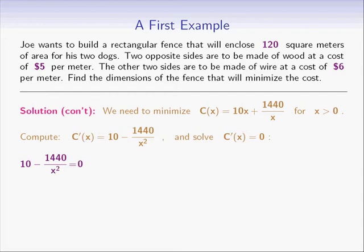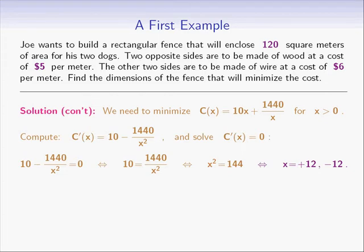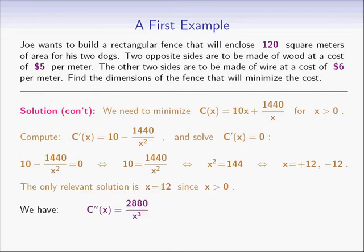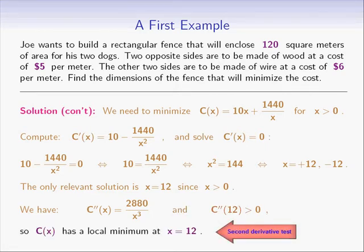The equation we get is 10 minus 1440 over x squared equals 0. This can be simplified, and we get x squared equals 144. The solutions are positive and negative 12, but the only relevant solution is x equals 12 since x has to be positive. So x equals 12 is our only critical point. Using the second derivative test, c double prime equals 2880 divided by x cubed, which is positive at x equals 12. Therefore, c(x) has a local minimum at x equals 12.